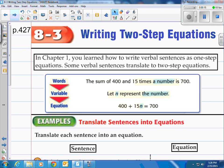Now if you remember back in Chapter 1, you learned how to write verbal sentences as one-step equations. Some verbal sentences translate into two-step equations. Here's an example: the sum of 400 and 15 times a number is 700. We're going to take that English sentence and change it into a math sentence. Let n represent the number. Now we'll translate it into math. The sum, which means addition, of 400 and 15 times the number, which is 15n, equals 700.